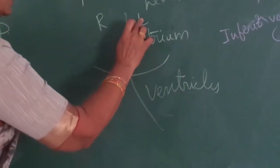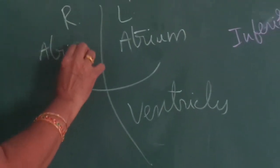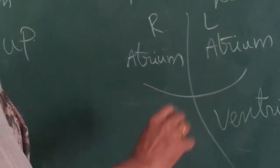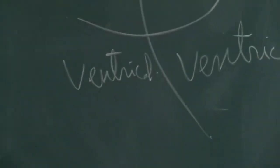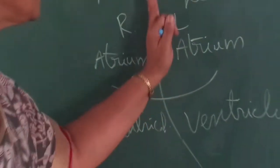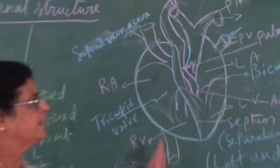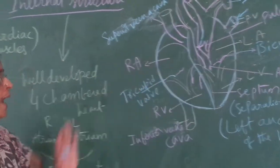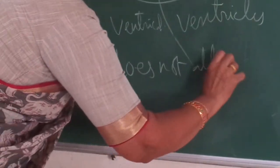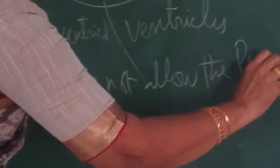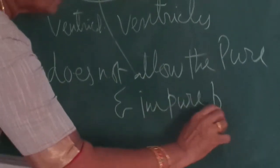The four chambers are: left atrium, left ventricle, right atrium, and right ventricle. Atrium is singular; atria is plural. The left and right halves of the heart are separated by a muscular septum. This muscular septum separates the left and right parts of the heart and does not allow pure and impure blood to mix.